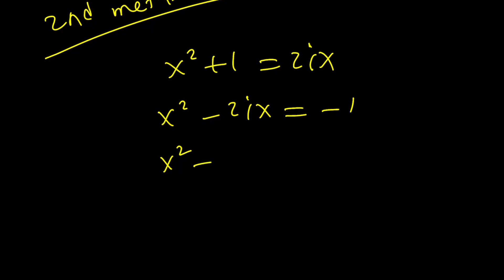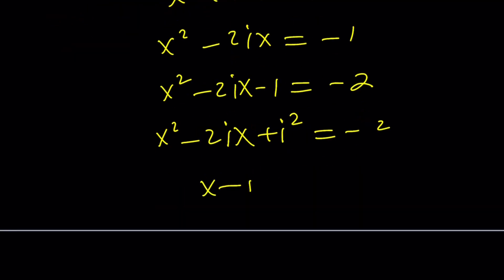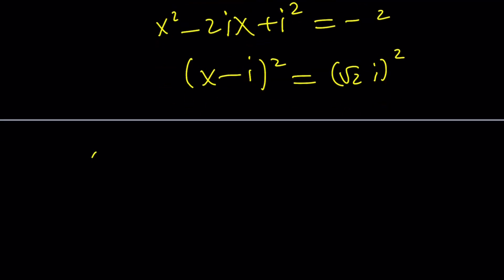Subtract 1 from both sides, and I'll tell you in a little bit why I'm doing it. Why aren't you adding 1 to both sides? Because I want to complete the square, but is that how you complete the square? Yes, because negative 1 is i squared, and guess what? This becomes x minus i squared equals square root of 2i squared. And then when you take the square roots, you get x minus i equals plus minus root 2i. x equals 1 plus minus root 2 all multiplied by i is going to give you the exact same thing.